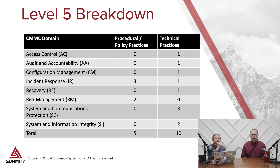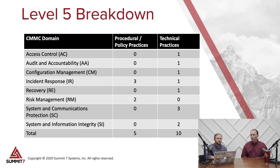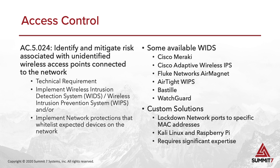The domains covered include access control, audit and accountability, and the big ones here are system communication protection and system and information integrity. That's where about half the technical controls come out for level five — in those last two domains.